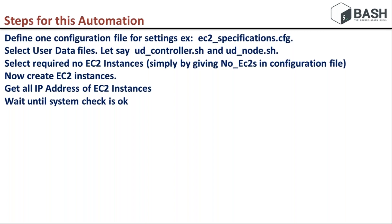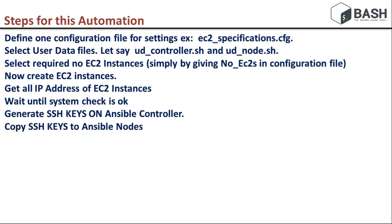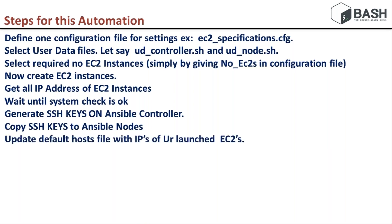To do some tasks — generate SSH keys on the Ansible controller and pass those keys to the nodes — I need to wait until the system check is okay. In the AWS console on the EC2 instance there is a parameter called system check; if it is okay, your instance is ready to accept requests. Before generating my keys, I will wait until the system check is okay. This is handled inside the shell script itself. After generating keys I will copy them to remote locations and update the hosts file with the IPs of the launched instances into the default inventory file at /etc/ansible/hosts.